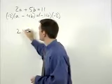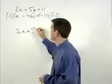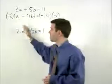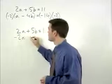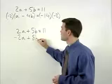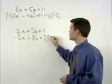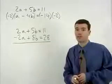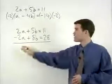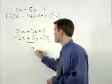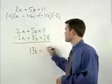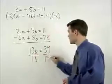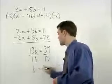2a plus 5b equals 11. And for our second equation, we have negative 2a plus 8b equals 28. Now when we add our two equations together, our a terms will cancel out, and we are left with 13b equals 39. Dividing both sides by 13, b equals 3.